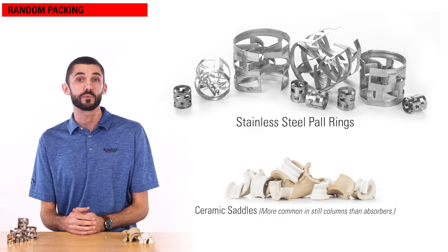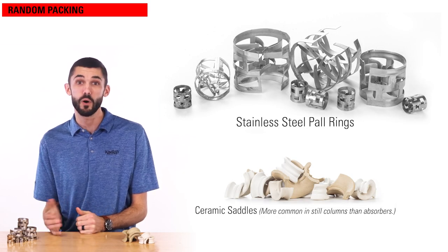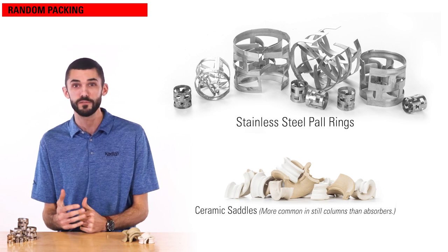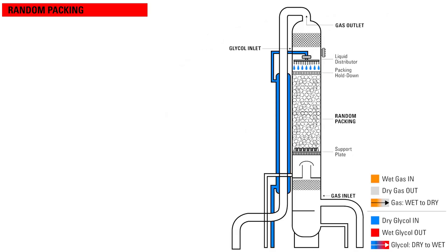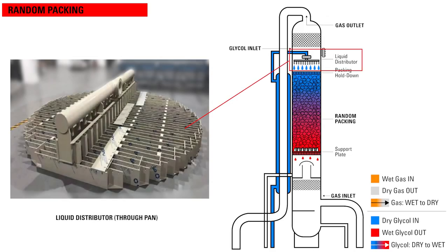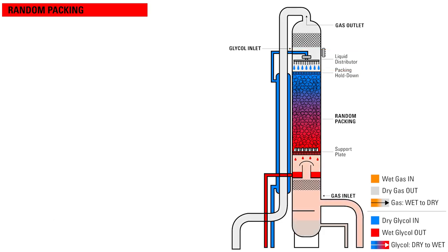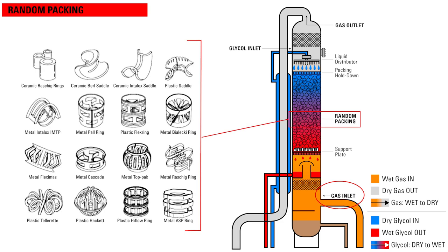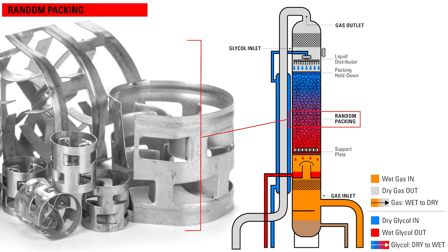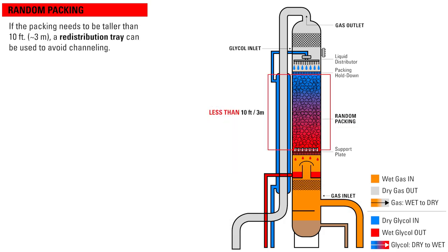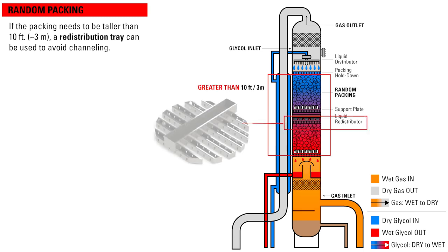In an absorber with random packing, the tower is filled with stainless steel paw rings or ceramic saddles. This random packing fills the tower and randomly falls into place. The dry glycol entering the top of the tower must flow over, around, and beside all of the packing, which distributes the glycol evenly through the tower. The gas enters towards the bottom and travels upward, contacting the glycol as it makes its way down, which absorbs the water from the gas. If the packing needs to be taller than 10 feet, a redistribution tray can be used to collect the glycol and redistribute it evenly through the tower to avoid channeling.